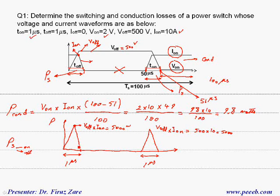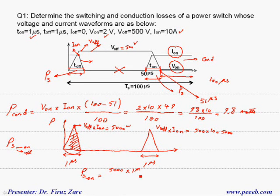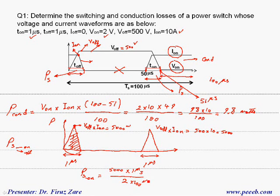To find the average switching loss, we need to find this area, which is the height times the base divided by 2. For the turn-on loss we have: 500 volts times 10 amps times 1 microsecond divided by 2, that is the energy, divided by the switching cycle of 100 microseconds. So in this case we have 50 over 2, which is 25 watts.